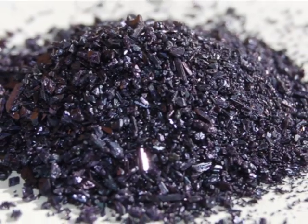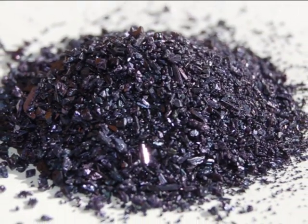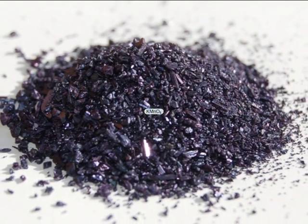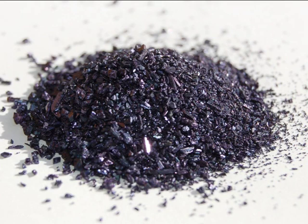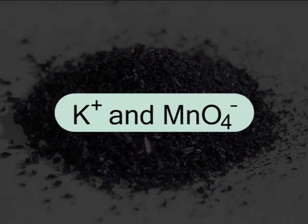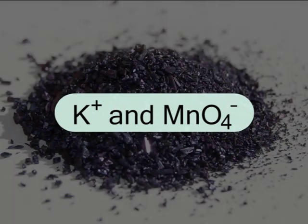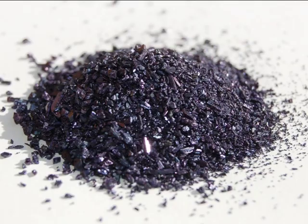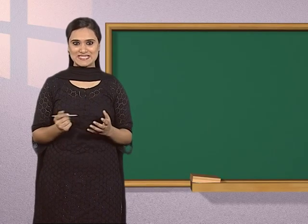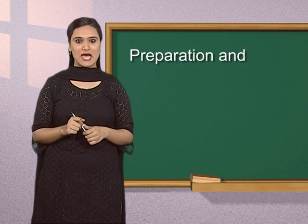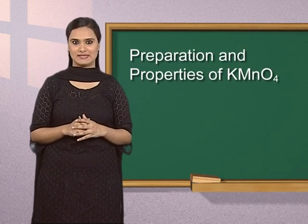Potassium permanganate is the inorganic chemical compound with the formula KMnO₄. It is a salt consisting of potassium ions K⁺ and permanganate ions MnO₄⁻. Previously, it was also known as permanganate of potash or Condy's crystals. Students, welcome to today's episode on preparation and properties of potassium permanganate.